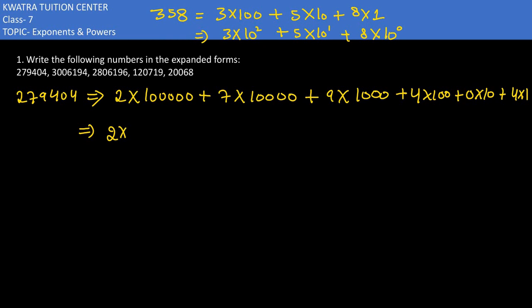Then we will change the values in exponent form. So 274404, how many zeros are there? There are 5 zeros, so 10 ki power 5. Then 7 ke saath 10⁴, 9 ke saath 10³, 4 ke saath 10², 0 ke saath 10¹, and last 4 into 10⁰. In this way we have to do all of them.